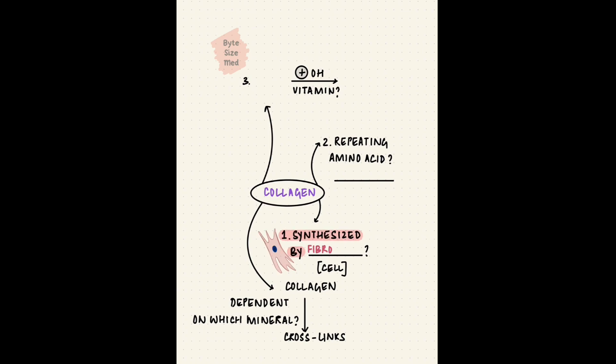Collagen is synthesized by fibroblasts. It's a triple helix with a glycine XY repeating sequence. Glycine repeats in each set. The hydroxylation of proline to hydroxyproline by prolyl hydroxylase needs vitamin C. And the cross-linking enzyme, lysyl oxidase, is copper dependent.